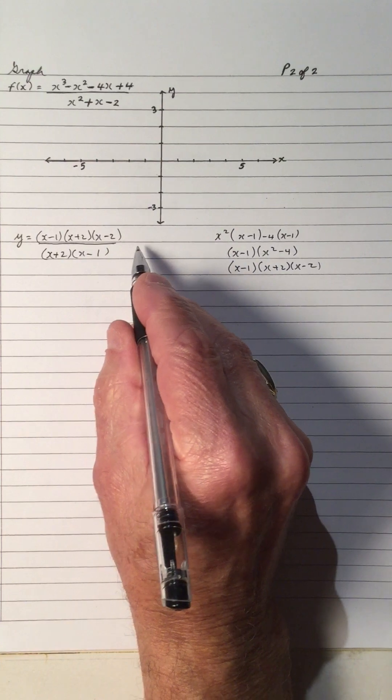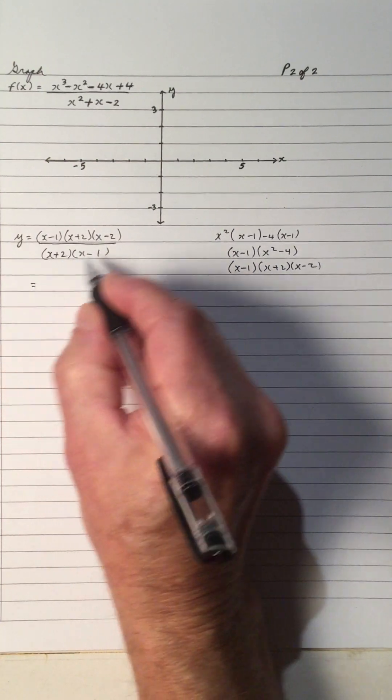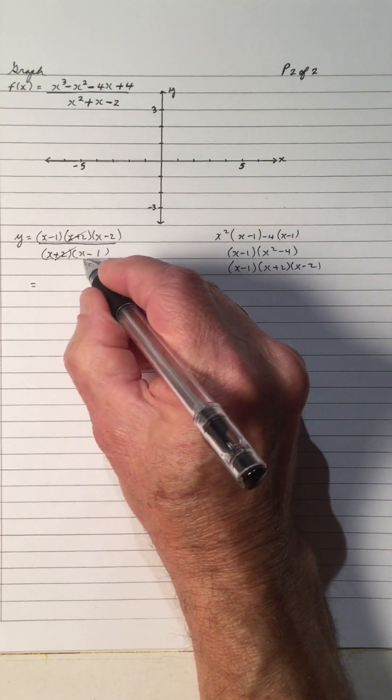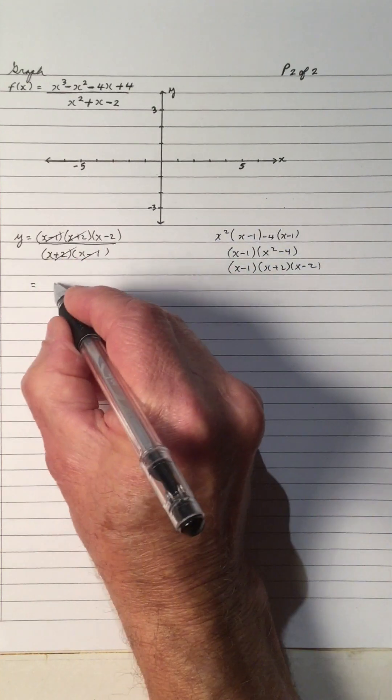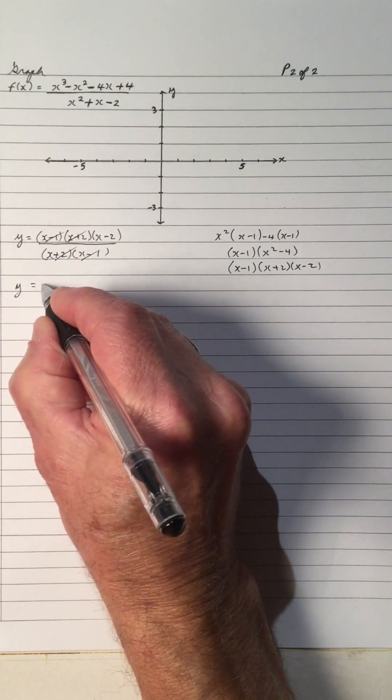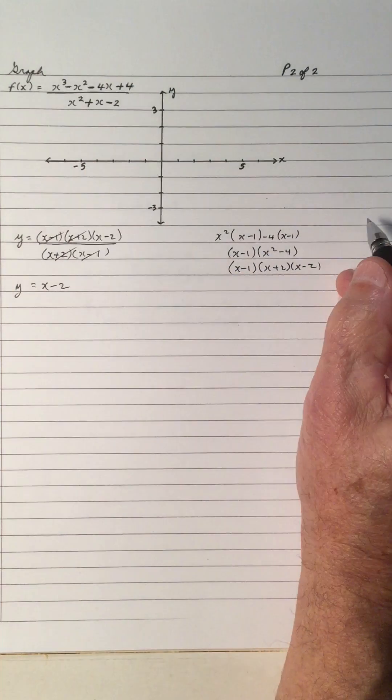So we have it all factored, so when we do, we notice that the x plus 2 cancels out, the x minus 1's cancel out, so we get y is equal to x minus 2.